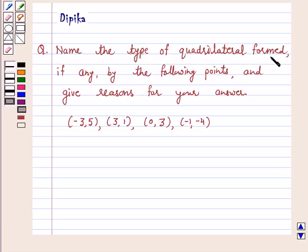Name the type of quadrilateral, if any, formed by the following points and give reasons for your answer. Points are (-3,5), (3,1), (0,3), and (-1,-4). So, before solving this question, let us recall the types of quadrilaterals.